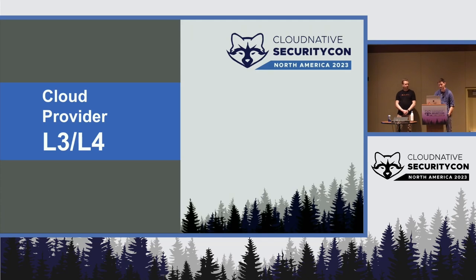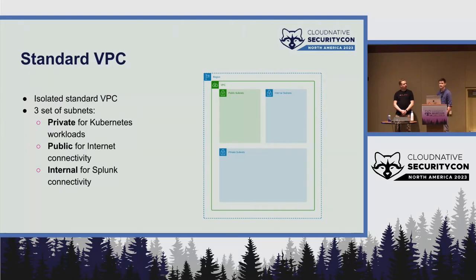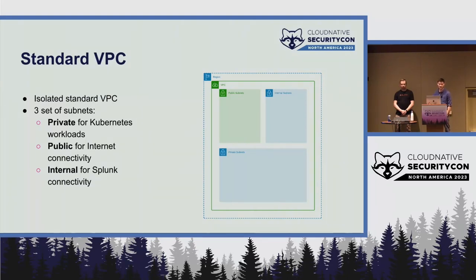Let's start with the cloud provider level — this applies to both AWS and GCP. We deploy our clusters into standard VPCs using a cookie-cutter VPC, typically one cluster per VPC. This gives us a networking sandbox for clusters. We deploy VPCs with three different sets of subnets: private subnets for Kubernetes workloads and pods, public subnets for internet connectivity where ingress and egress traffic goes, and internal subnets for connectivity inside Splunk or between clusters.